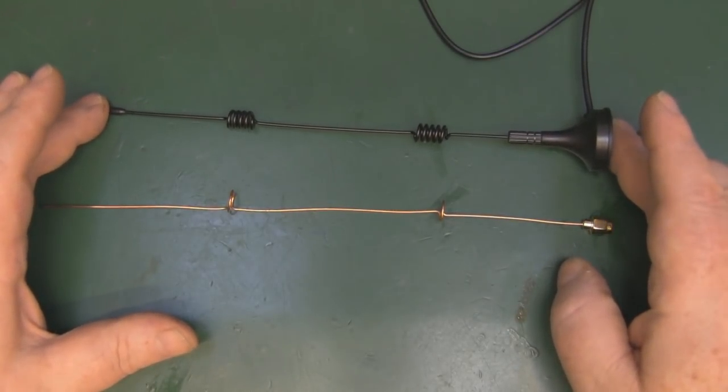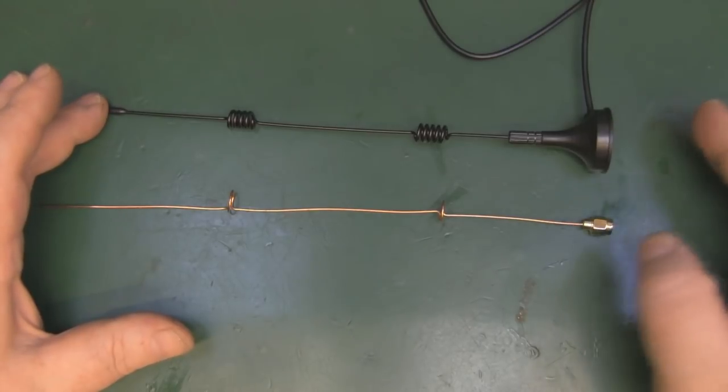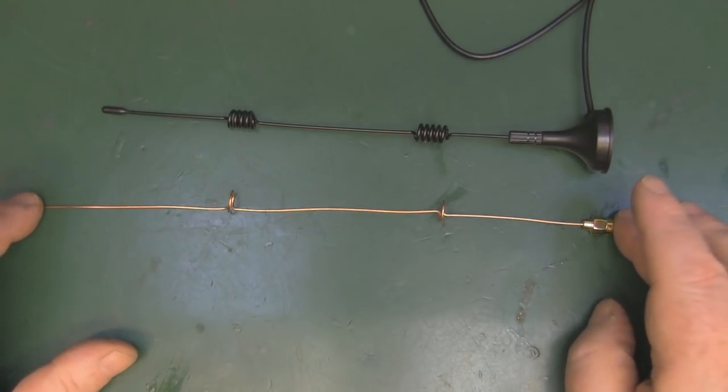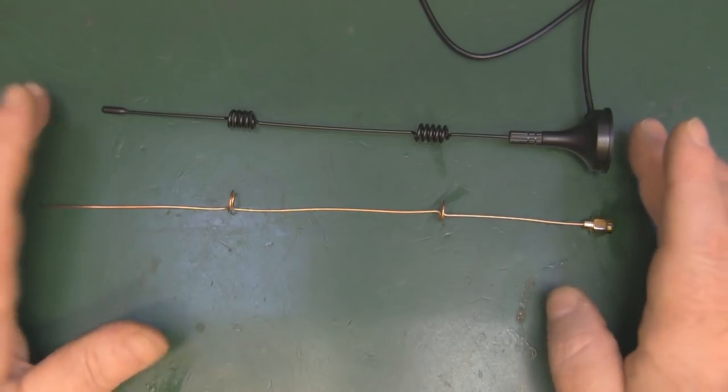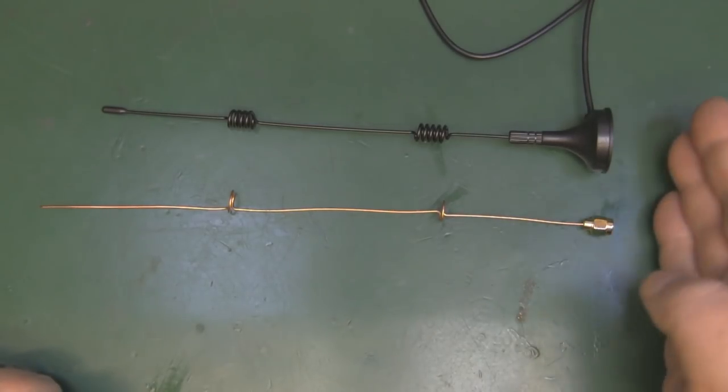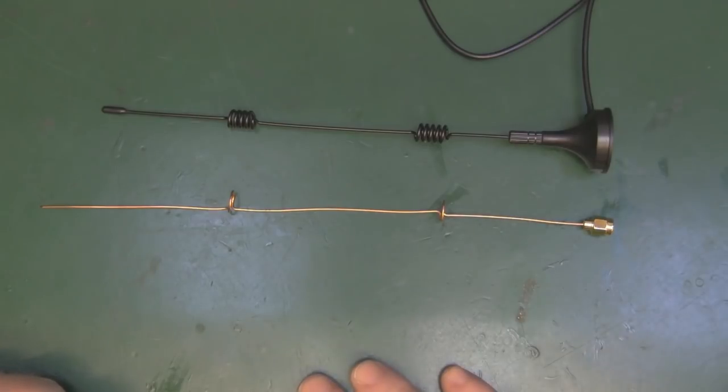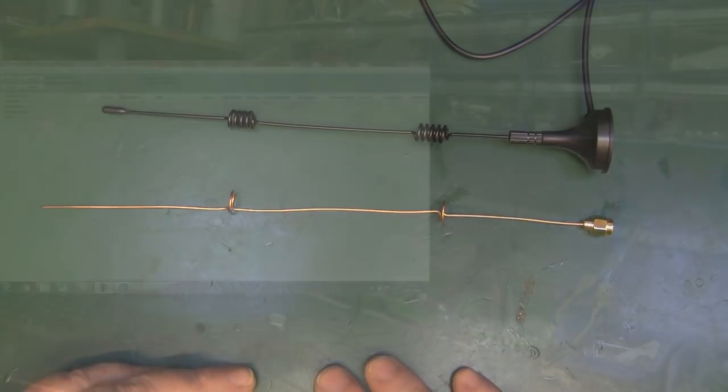Let's do a quick test then. We'll hook this one up, the eBay one, up to the alpha card first, see how well it does here in the lab. Then we'll compare it to this one that I've made here. I am expecting this one that I've made to perform better than this one because I'm expecting the coax on the eBay one to be extremely lossy.